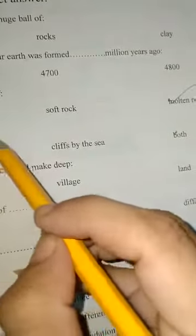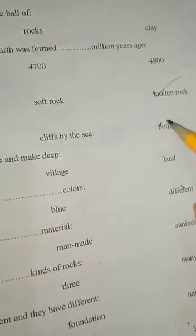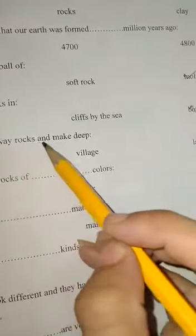We can see rocks in mountains, cliffs by the sea, and both. Rivers wear away rocks and make deep valleys.